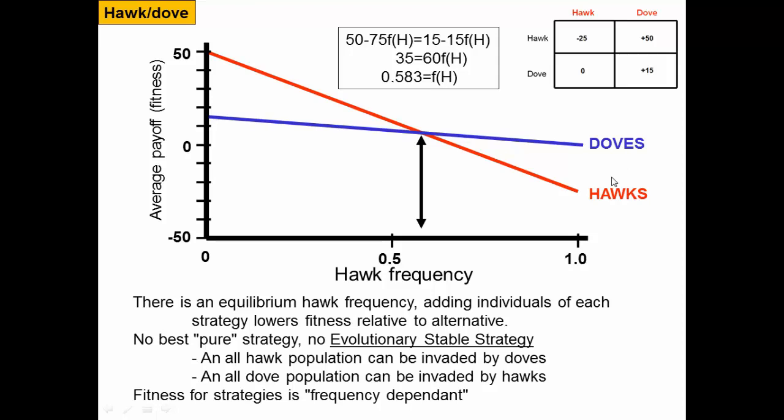If you're playing the hawk strategy in a population with no other hawks, you're always playing against doves and get the 50 payoff. This declines all the way to negative 25 when the population is entirely hawks. So the fitness of the hawk declines as there are more hawks, and the fitness of the dove also declines as there are more hawks. When hawks are rare, being a hawk is better; when hawks are very common, being a dove is better.